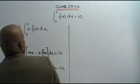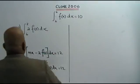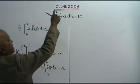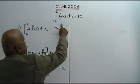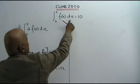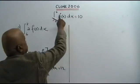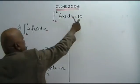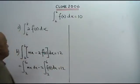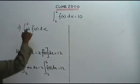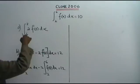Part A: you are asked to find the value of this. You are given that the integral of f(x) dx between the limits 6 and 2 equals 10. So you are asked to find this value.